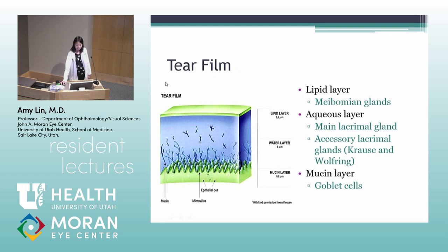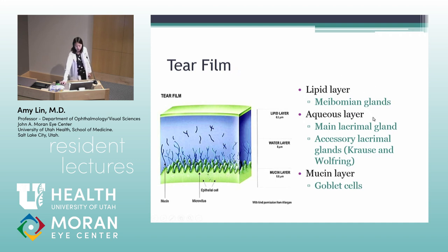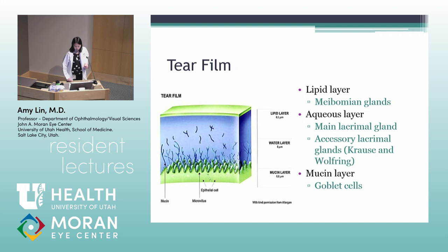The tear film also has layers: a top lipid layer, then an aqueous layer, and a bottom mucin layer. The top lipid layer is produced by the meibomian glands in the eyelids and prevents the tear layer from evaporating. The aqueous layer comprises the main bulk of the tear film and is produced by the main lacrimal gland and the accessory lacrimal glands of Krause and Wolfring. The bottom mucin layer is produced by conjunctival goblet cells and allows the tear film to adhere to the ocular surface.